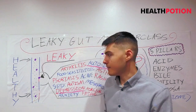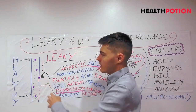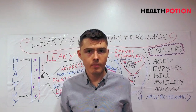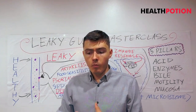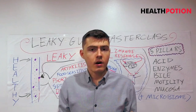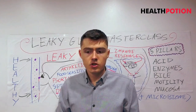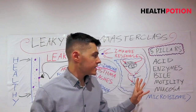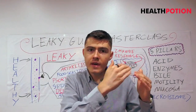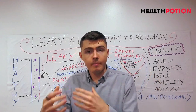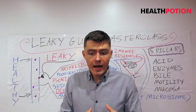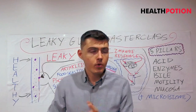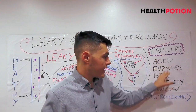Instead of getting stuck in a negative feedback loop — where the gut is damaged, so you eat foods you can't digest, which causes autoimmunity, makes you feel bad, damages the gut further, meaning you can't nourish yourself or recover — we break these vicious cycles. Instead, we start building positive feedback loops where the results build on top of themselves, and once you're in this positive feedback loop the results just keep compounding.